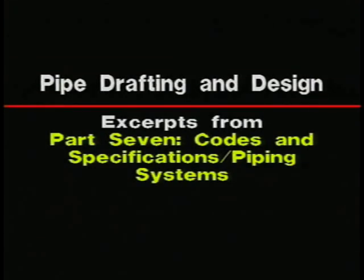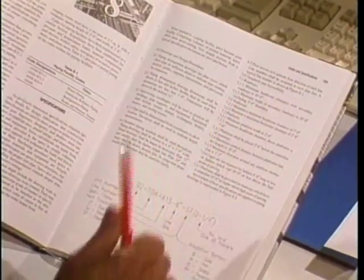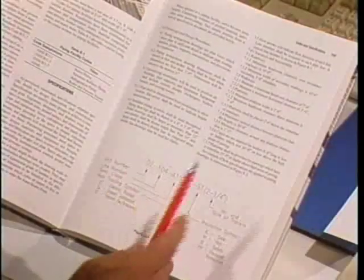Now let's look at how specifications actually relate to the drawing and the construction of the facility. Looking at the right column of our example, we're discussing clearances and accessibility. There are many different sections of a piping specification; this example covers sections six and seven, which are very specific in the areas they address.